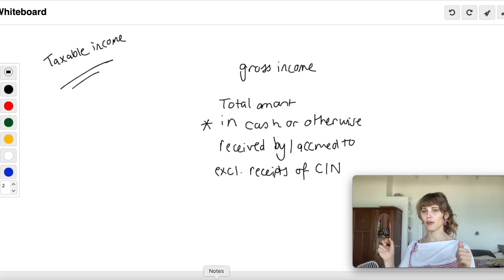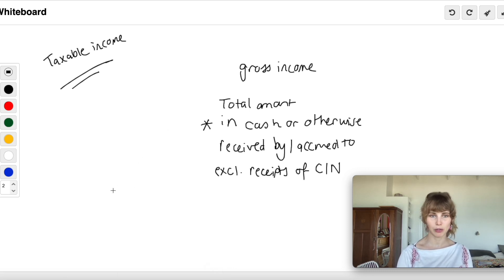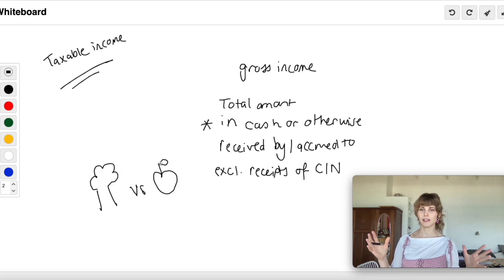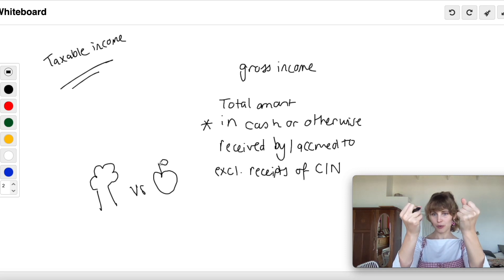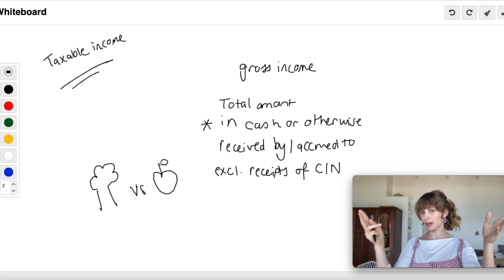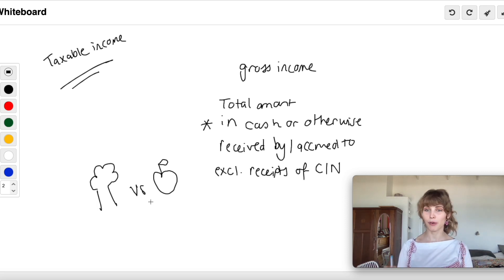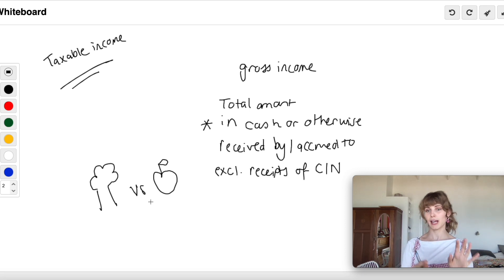Then 'received by or accrued to' — the important principle is you always recognize income at the earlier of receipt or accrual. So if you invoice a client, even though you haven't received the money yet, that invoice amount is included in your gross income. Gross income excludes receipts of a capital nature — think of it as the tree versus the fruit. The tree is the income-earning structure (like a house you rent out), and the fruit is the rental income. The tree is capital in nature and won't be included in gross income; the fruit — the rental income — will be included.